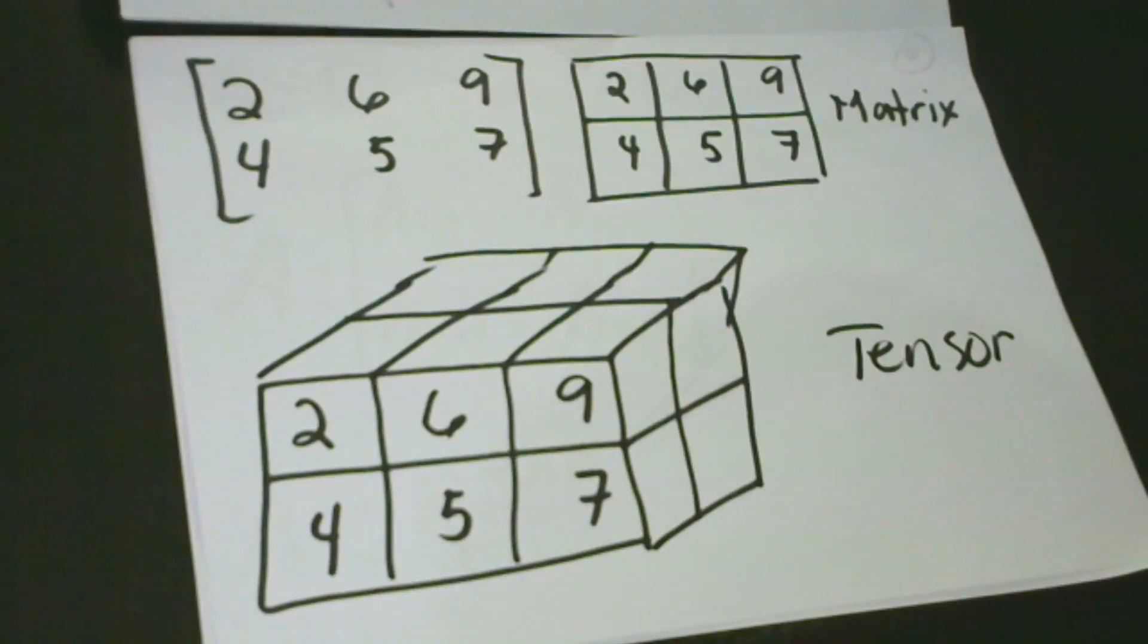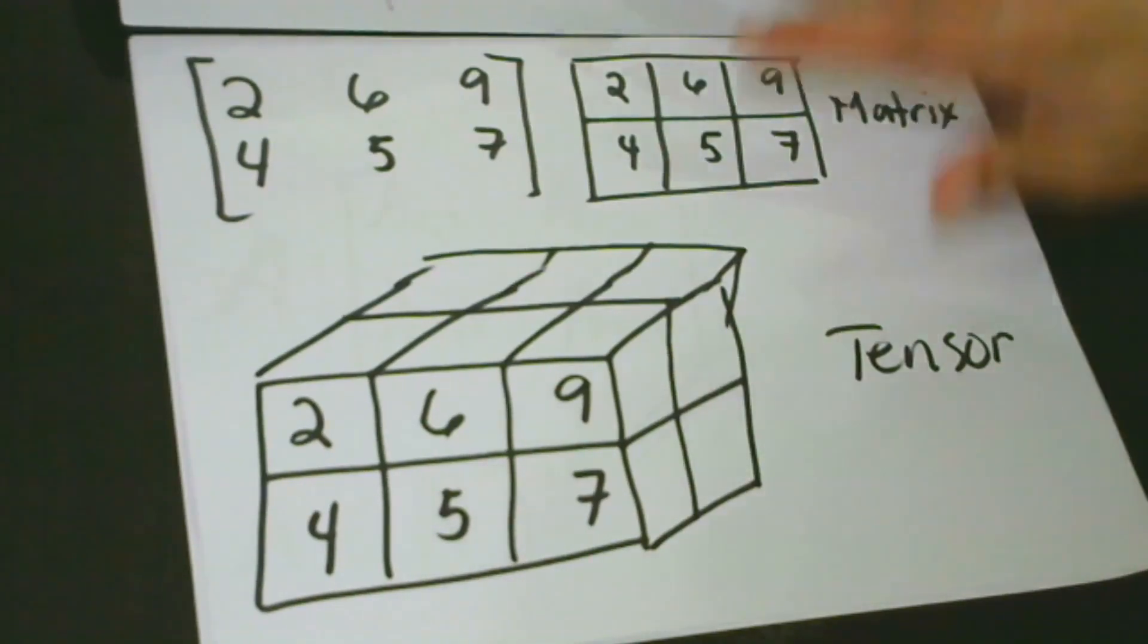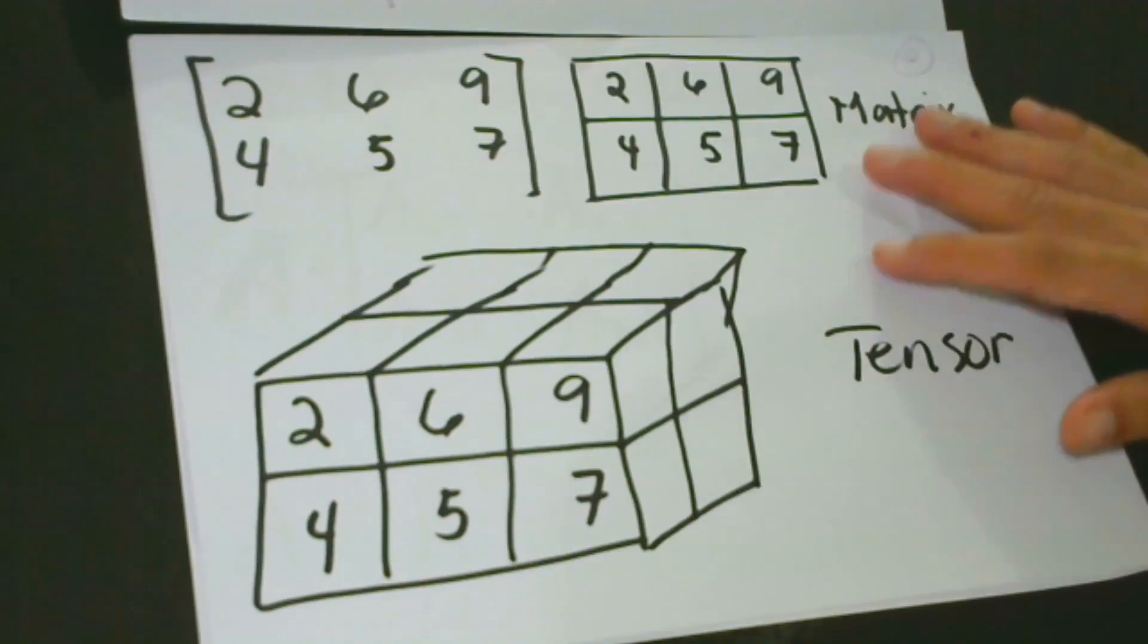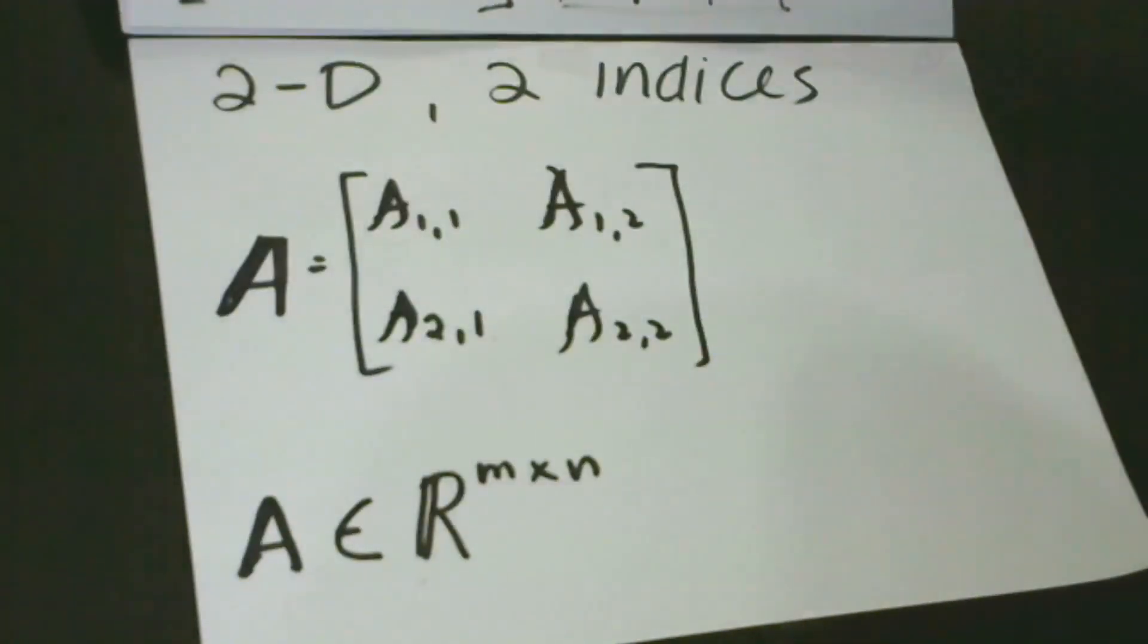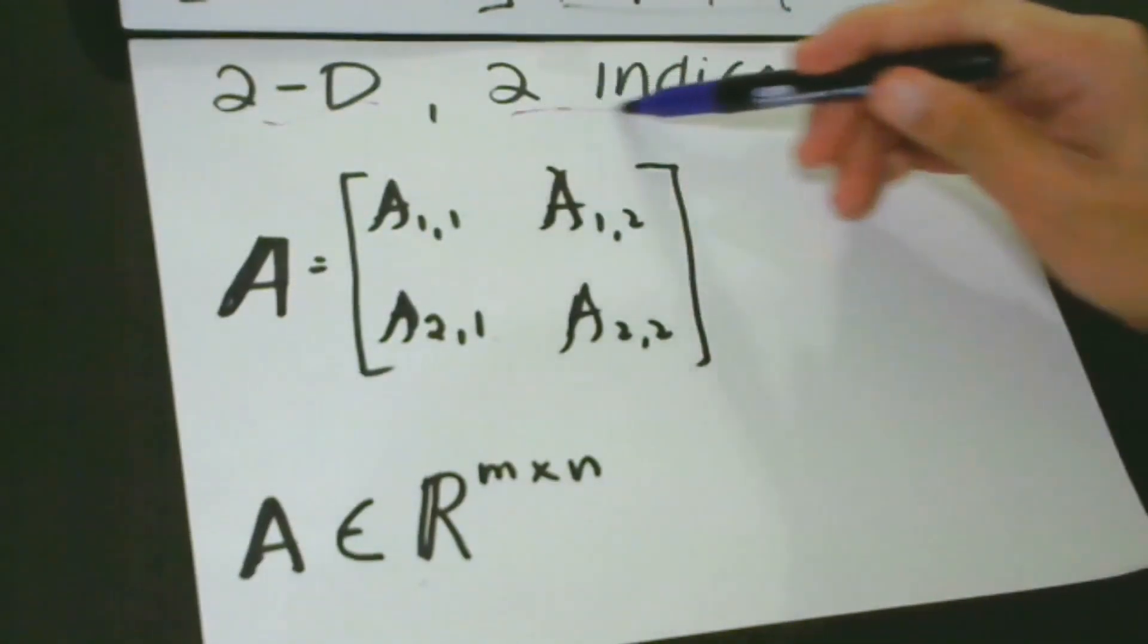So this is an example of a matrix. So let's define first what a matrix is. So matrix is a 2D array of numbers. So it means that it is identified by two indices instead of just one. Again, I would like to repeat that for emphasis. Matrix is a 2D array of numbers. So it means that it is identified by two indices instead of just one. So, what we have to take note of in the definition is that it is 2D and it has two indices.